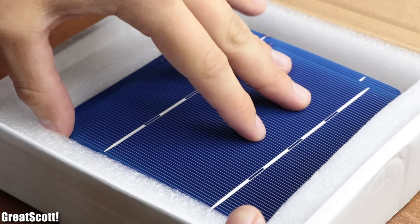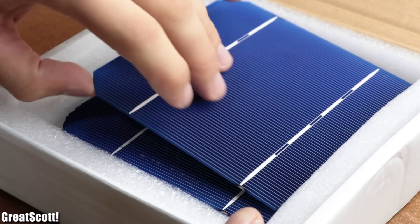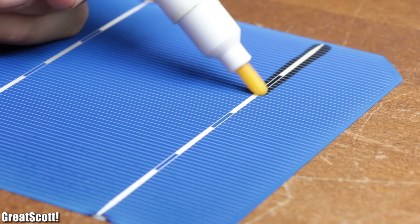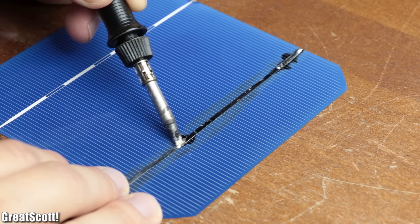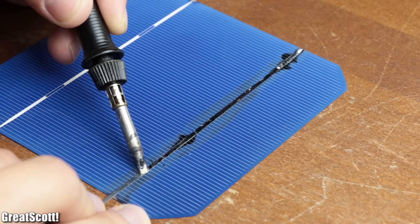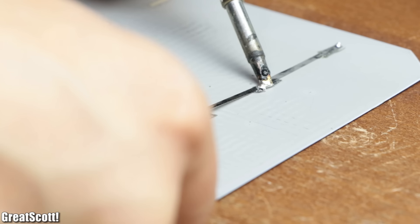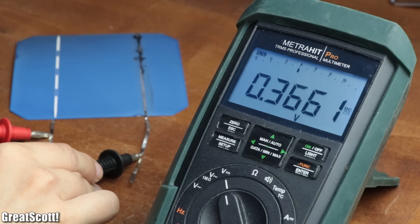For a while now, I've had those monocrystalline solar cells laying around. By adding a bit of flux to them, we can solder a so-called solar tapping wire to its front and back side and measure a voltage potential between both sides.